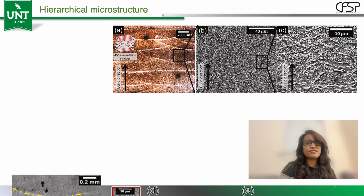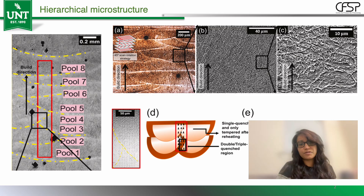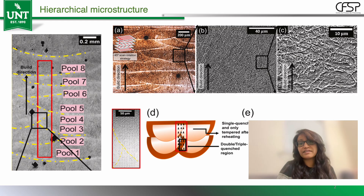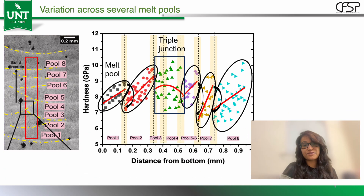But here's the challenge: with so much data, manual interpretation becomes impossible. So we combined this experimental mapping with machine learning algorithms like decision trees and support vector machines to automatically detect patterns and classify the different kinds of mechanical responses.